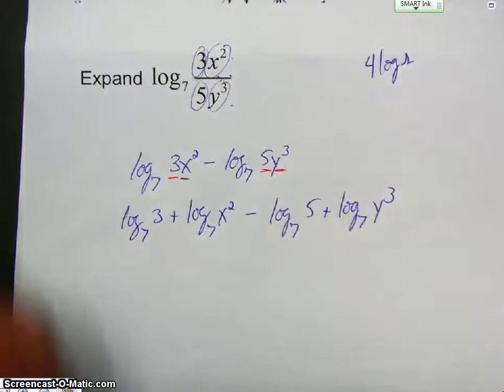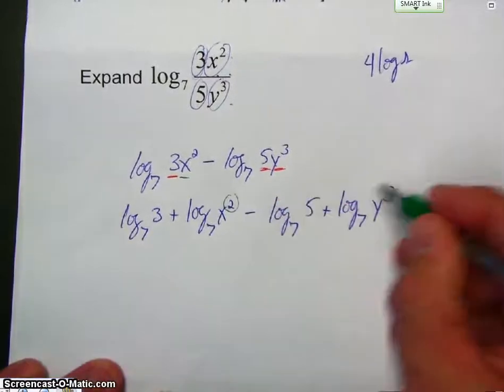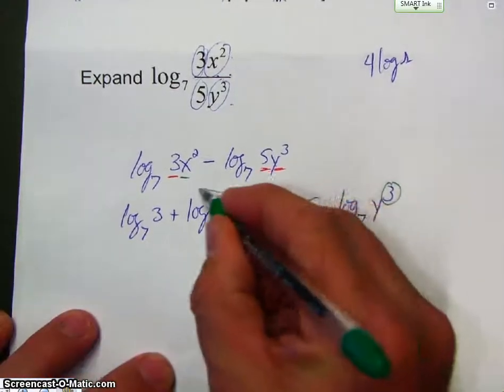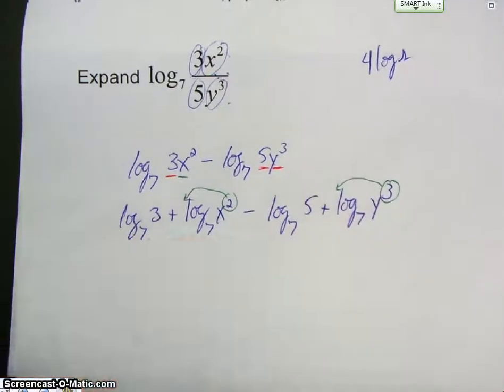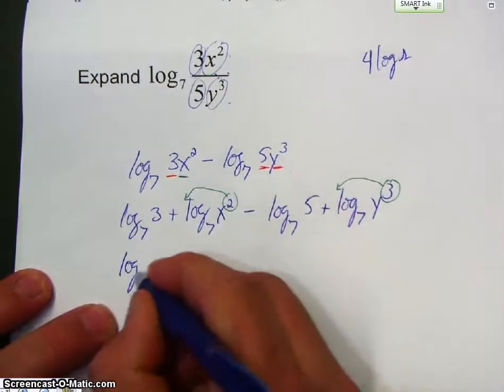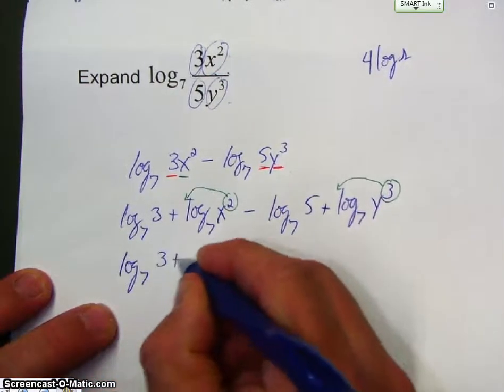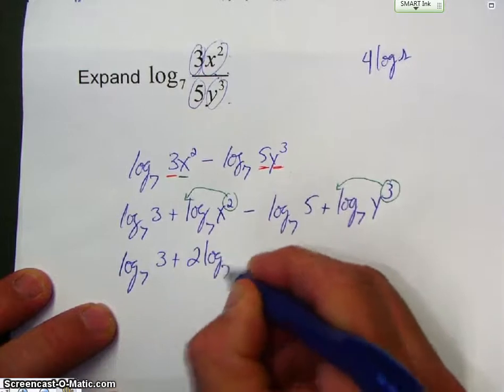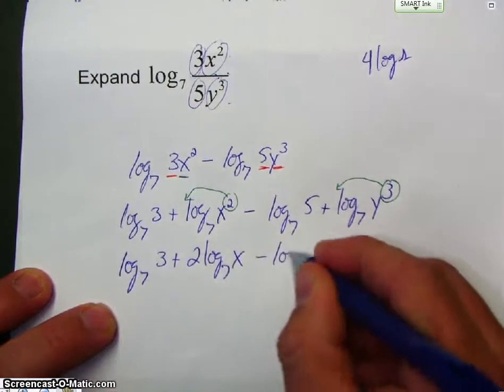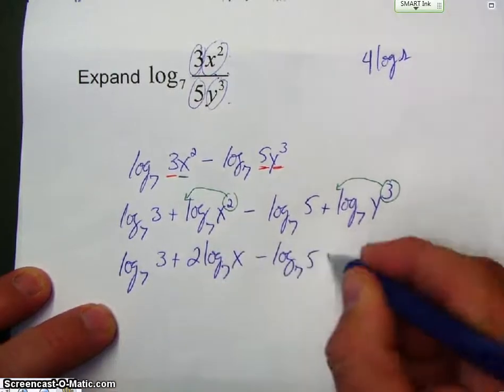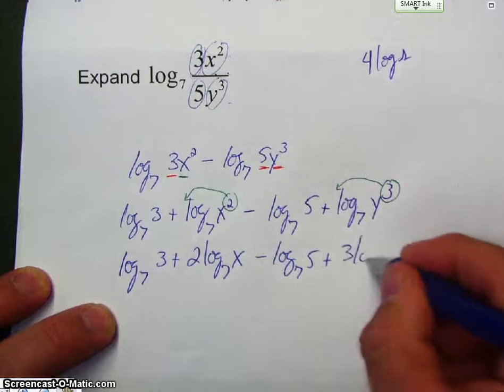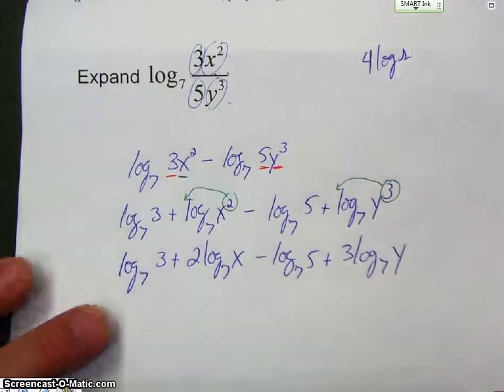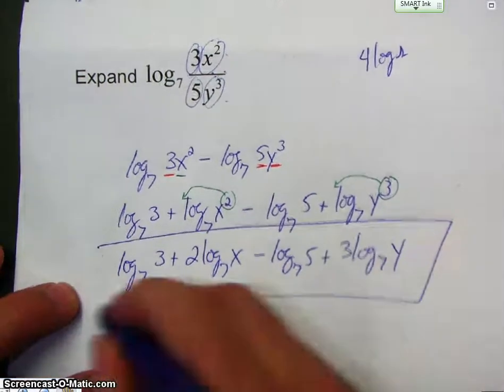Now, we deal with all the exponents. So, we've got 1, 2. So, remember, those become the coefficients. So, now we have log base 7 of 3, plus 2 log base 7 of x, minus log base 7 of 5, plus 3 log base 7 of y. There we go.